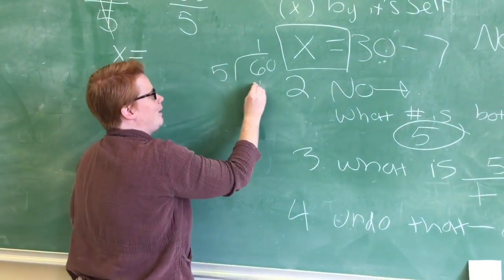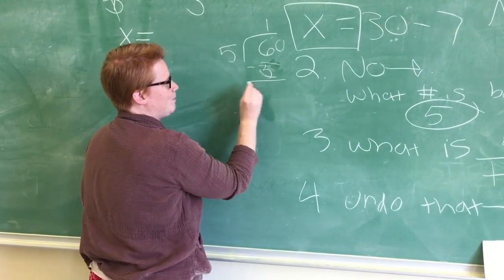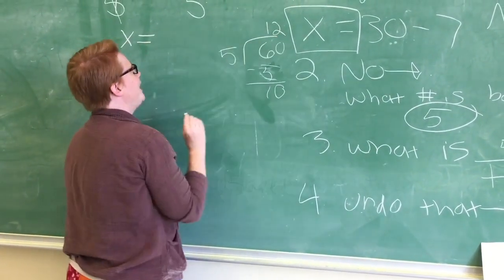5 goes into 6 once. 1 times 5 is 5. 6 minus 5 is 1. Bring down the 0, that's 10. 5 into 10 is 2. Yay!